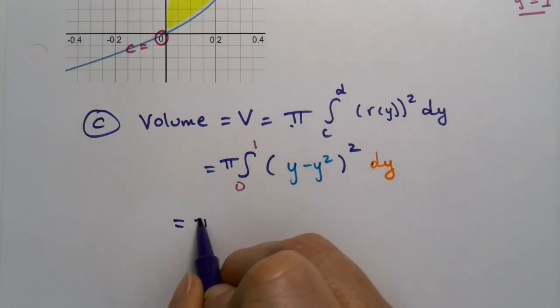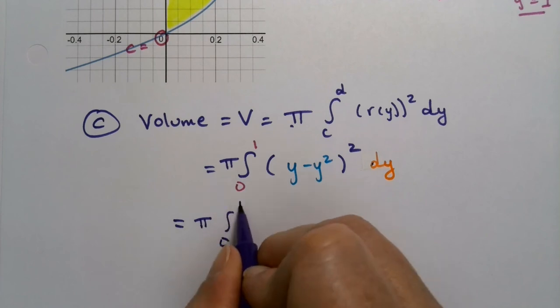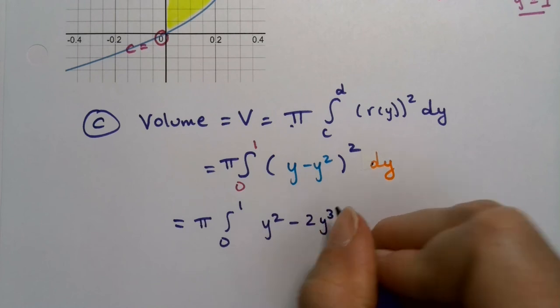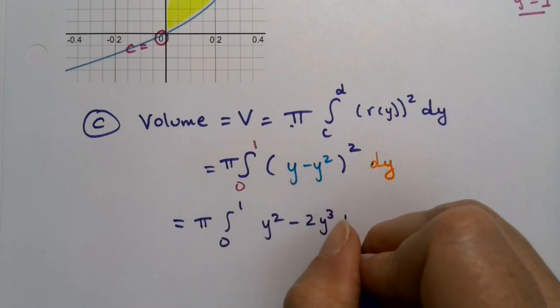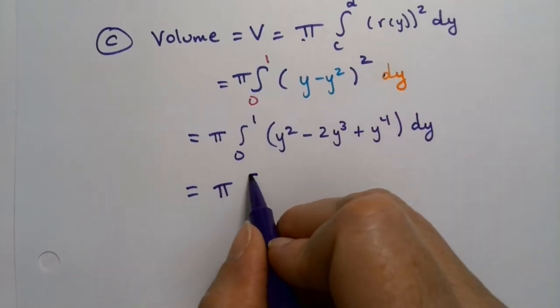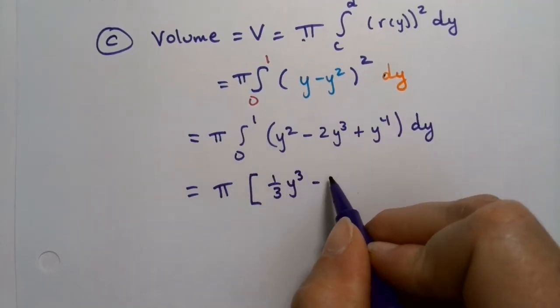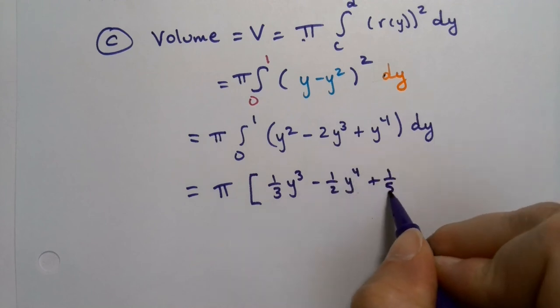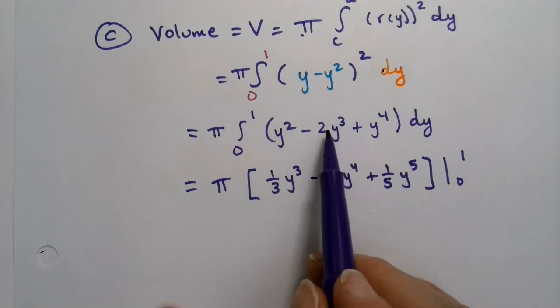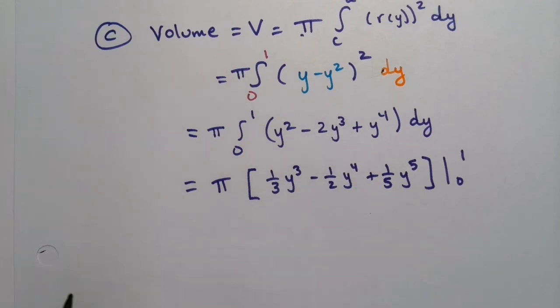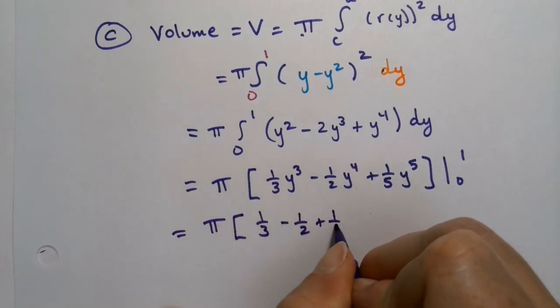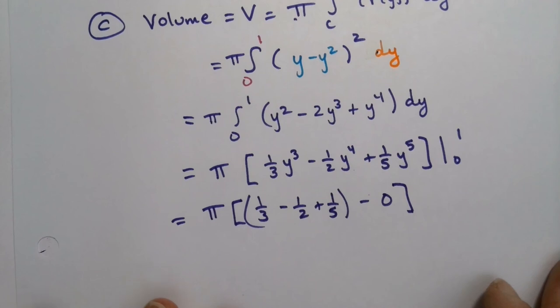This is π times the integral from zero to one. I'm going to need to foil this out, so it's y² - 2y³ (because y² times y is y³ and there's two of them) plus y⁴ dy, which is π times (1/3 y³ - 1/2 y⁴ + 1/5 y⁵) from zero to one. That would be π(1/3 - 1/2 + 1/5), all minus zero because we don't care about the back half because it's a polynomial.